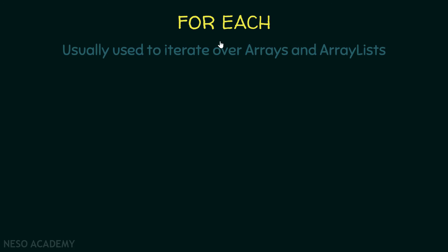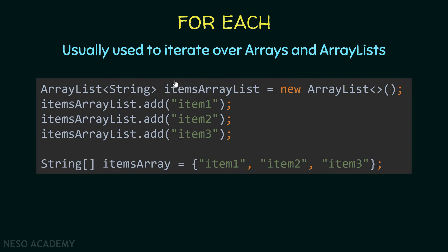A for-each loop is usually used to iterate over arrays and array lists. Let's create an array list and an array. This is an array list of strings and it contains three elements: item 1, item 2, and item 3. Similarly, this is an array of strings and it also contains three elements. Now let's iterate over this array list and this array using a for-each loop.